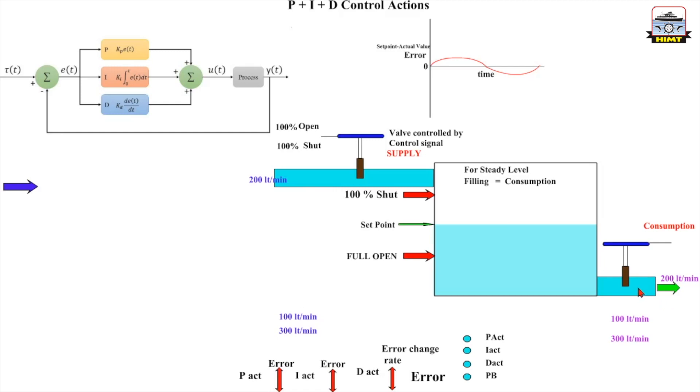We want the water level to be here. Now 200 liters of water per minute is consumed from the tank and same 200 liters per minute of water is filling the tank. So the level obviously is going to maintain here.